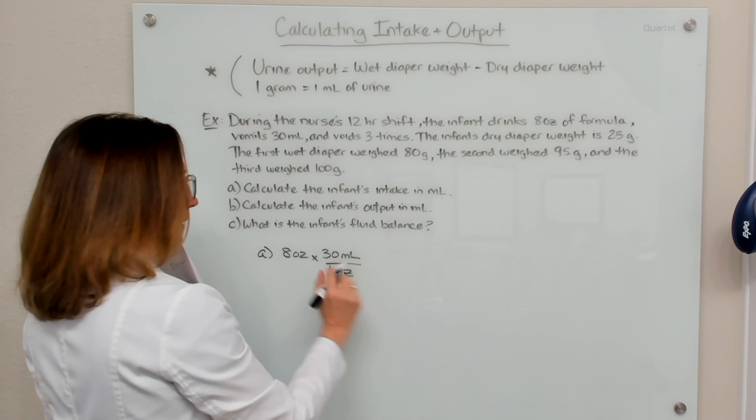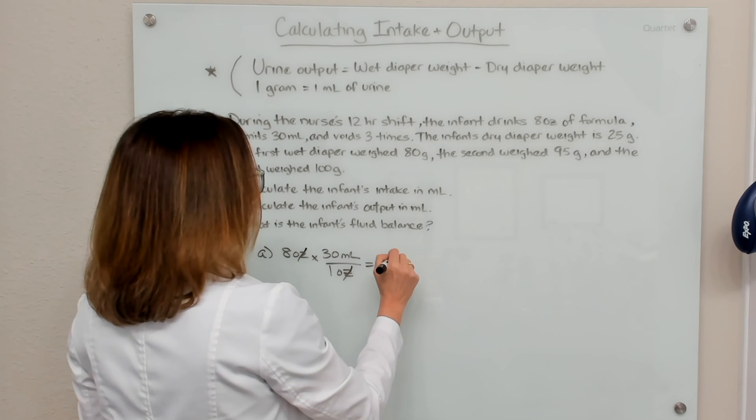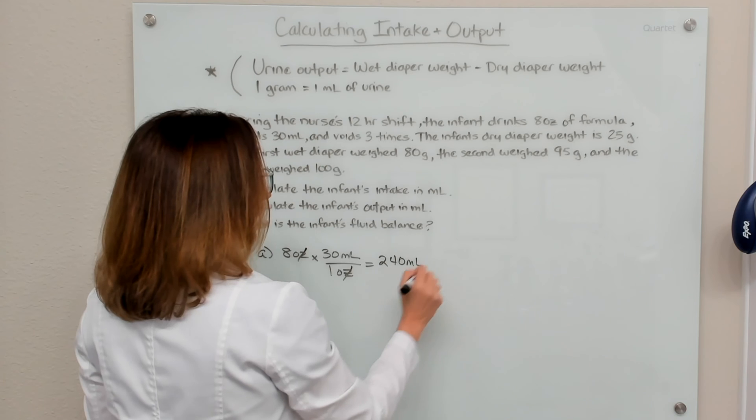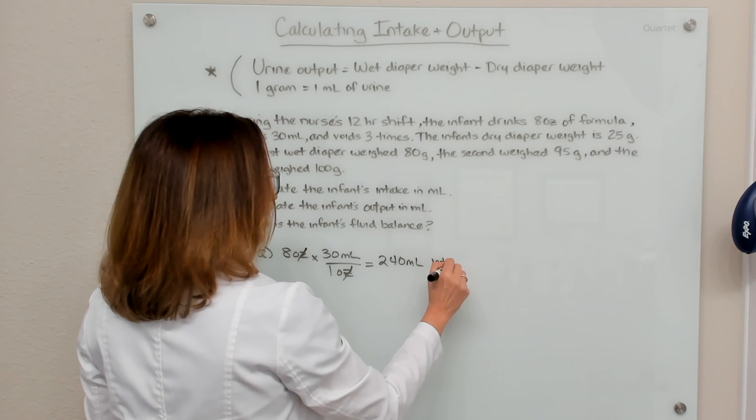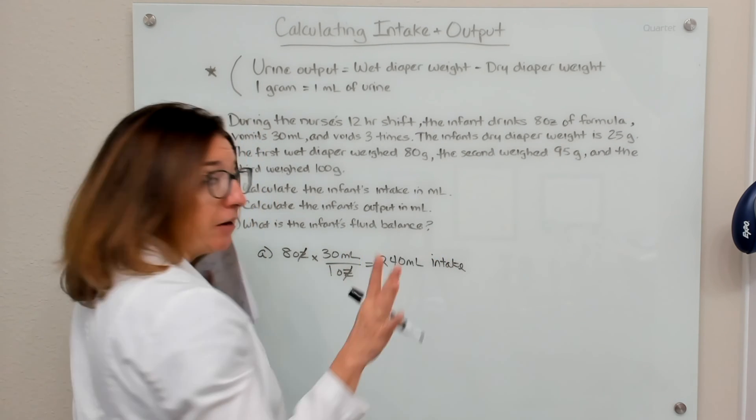This is something you definitely need to remember: there are 30 ml in an ounce. So if I calculate this out, I end up with 240 ml, and that is the infant's intake. So that part was easy enough.